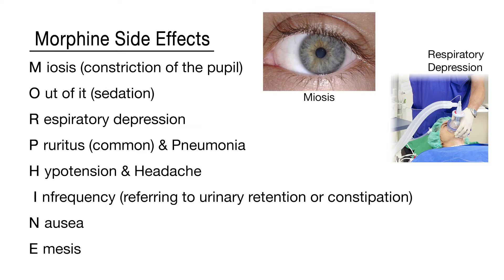Morphine is an opioid analgesic, or narcotic, that is used to treat moderate to severe pain. It has several side effects and can cause addiction, overdose, or death if misused. Remember the following common side effects of morphine: miosis or constriction of the pupil, sedation, respiratory depression, pruritus which is common, and hypotension and headache.